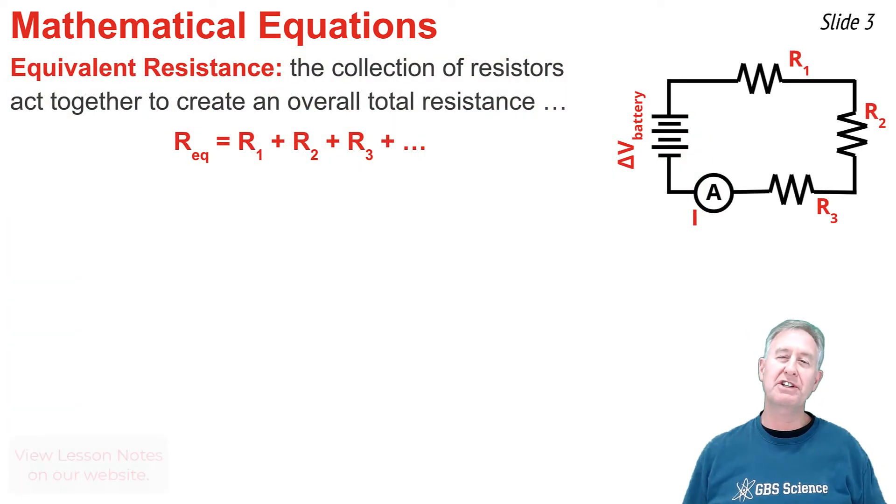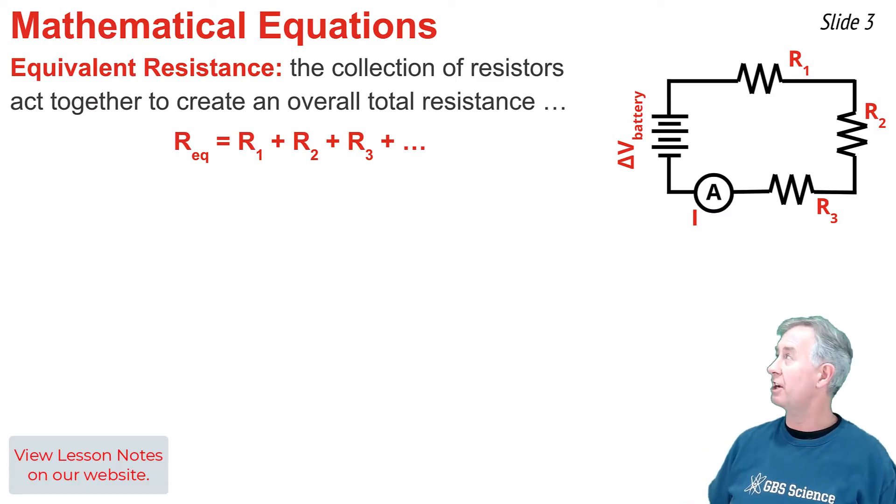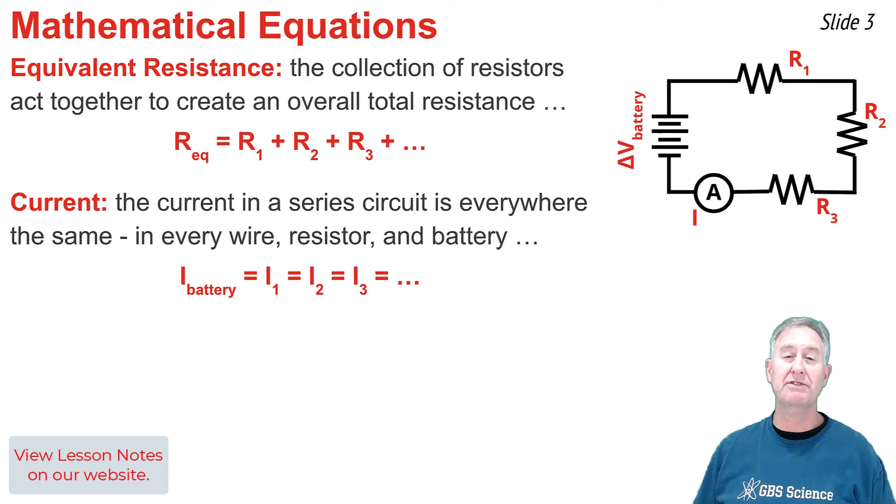The collection of resistors in a series circuit offers a total or overall resistance to the flow of charge. We call this the equivalent resistance, and we can calculate it by taking the sum of the individual resistance values.